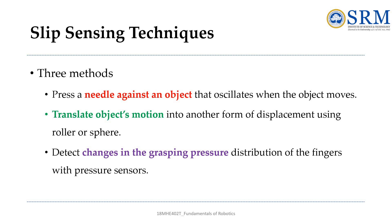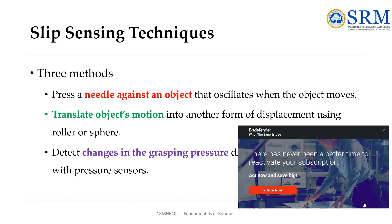There are three ways to detect when an object moves in a gripper. The first is by pressing a needle against the object, causing it to vibrate when the object shifts. The second is transforming the object's movement into a different kind of motion using a roller or a sphere. The third is noticing changes in how the fingers of the gripper apply pressure to the object, which can be measured by pressure sensors.